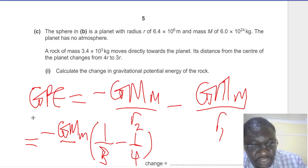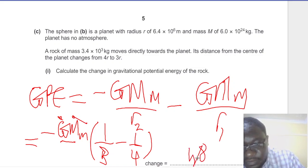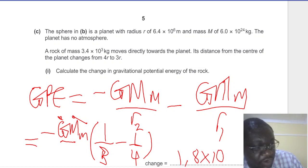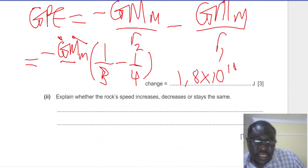So that's how it's going to be. And if you work it out, because we know G is 6.67 times 10 to the power of minus 11, and then we know the masses are given, you should get a change of 1.8 times 10 to the power of 10 joules.